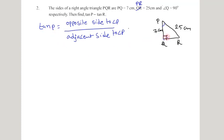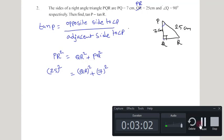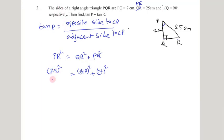To find the measurement of QR, if you observe this right angle triangle, PR is the hypotenuse. By using the Pythagorean theorem we can write: hypotenuse squared equals base squared plus height squared. So we write PR squared — that is 25 squared — equals QR squared plus PQ squared. PQ measurement is 7 centimeters, so substituting: 625 equals QR squared plus 49. Transposing 49 to the other side it becomes 625 minus 49 equals QR squared.